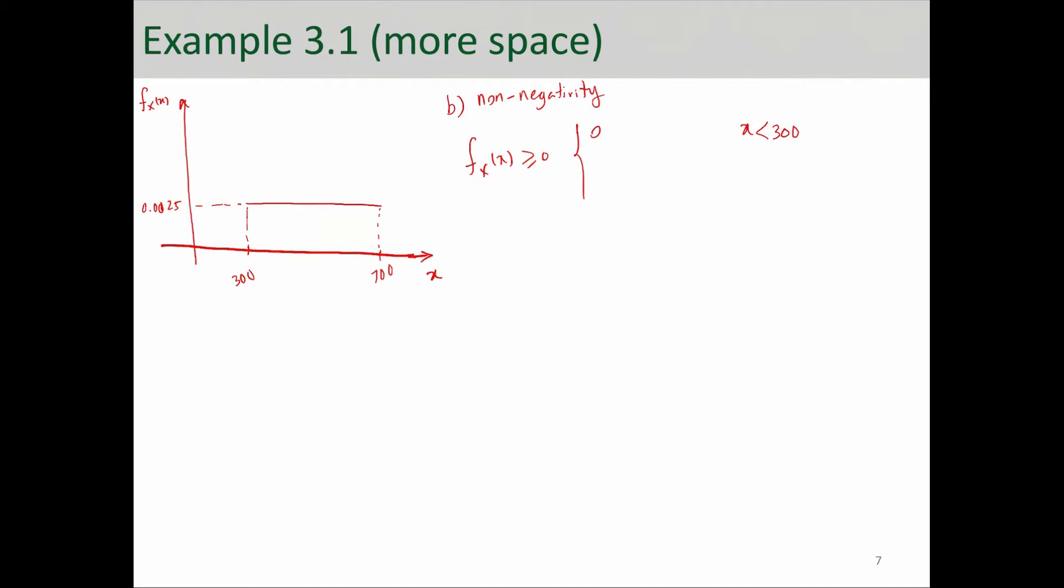Essentially, the probability is equal to 0. When X is between 700 and 300, that probability is 0.0025. And when X is greater than 700, the probability is again 0. So, in all cases, f of X is never negative. So, that condition is passed, right?